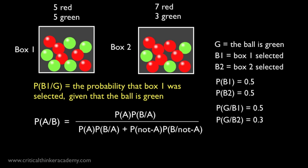This is the general rule in terms of generic A's and B's. We need to rewrite this in terms of G, B1, and B2. Note that A is going to become B1, the event of choosing box 1. What is not A?